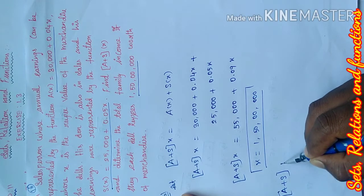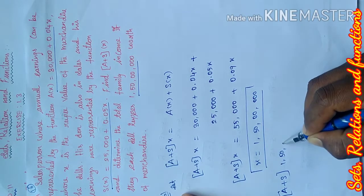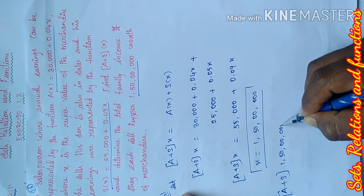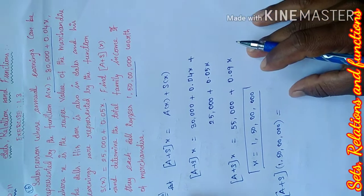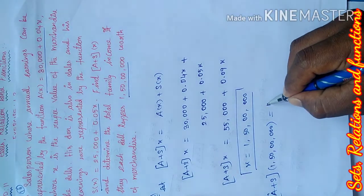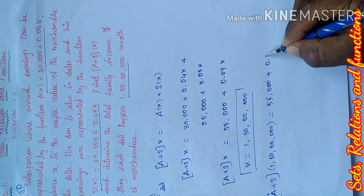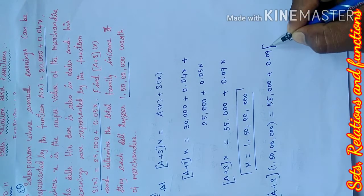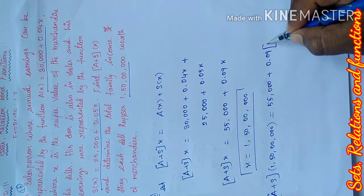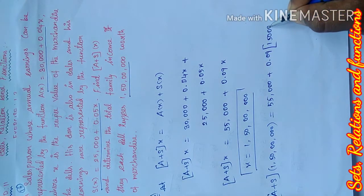Into x equals 1,50,000 equals 55,000 plus 0.09 into x. We'll apply the entire term, 1,50,000.